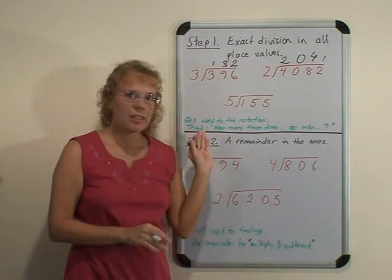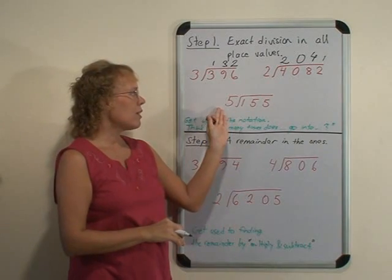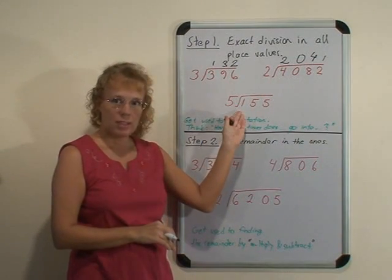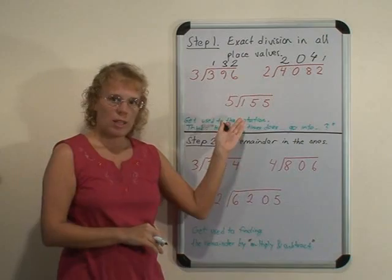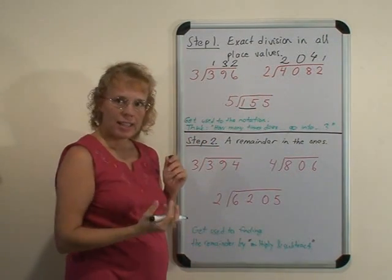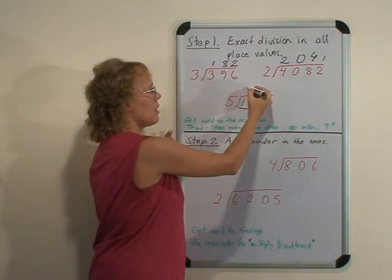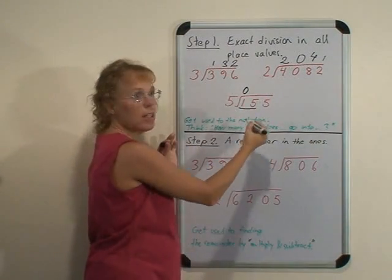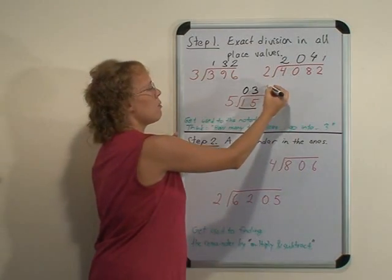This last example is a little bit different because here we have 5 and then 1 hundred, and 5 doesn't go into 1 evenly. But if we think of it as 15 tens, then 5 goes into 15 evenly, so we can write down 0 for the hundreds and then 3 tens and then 1.